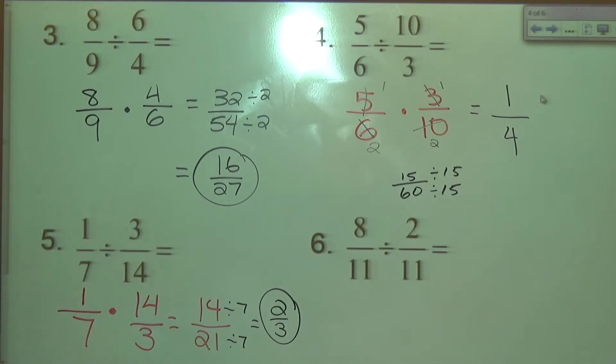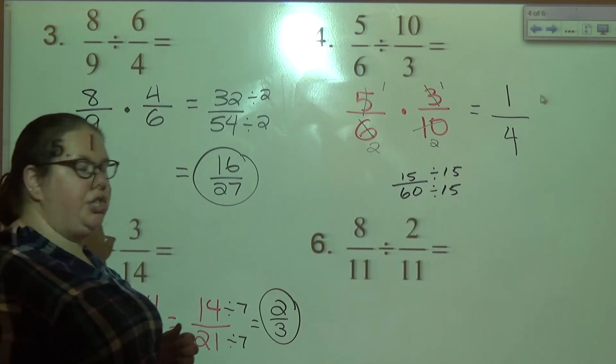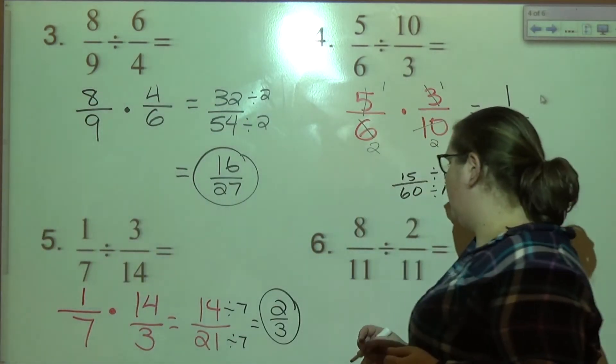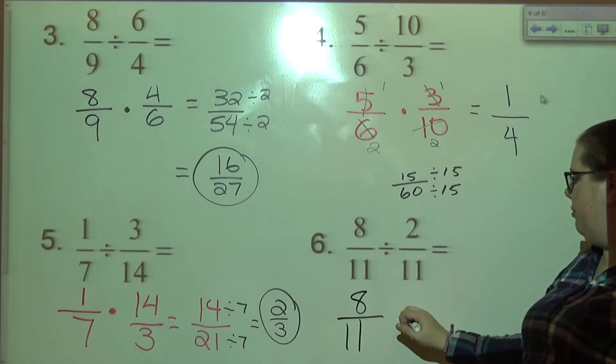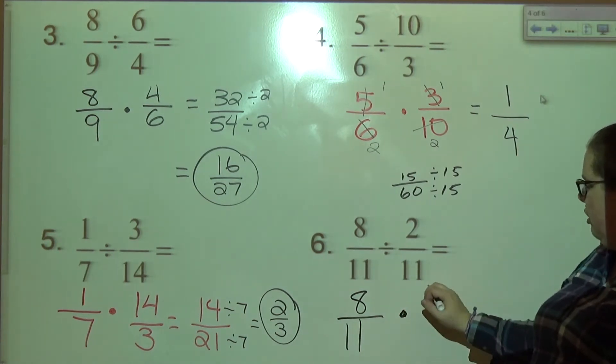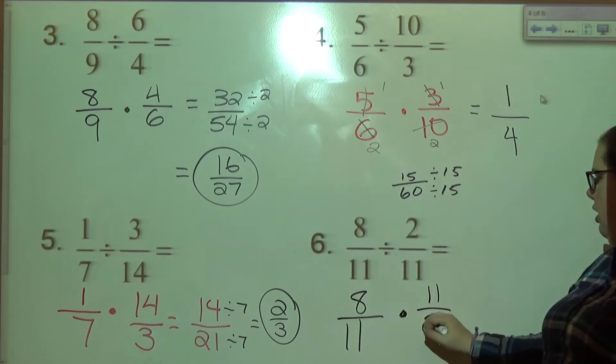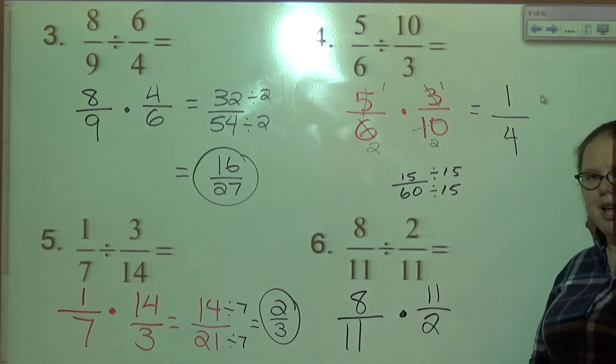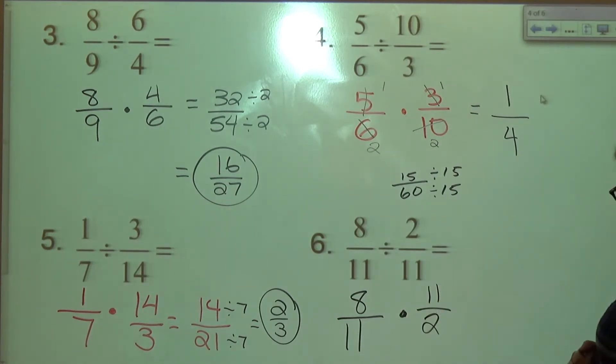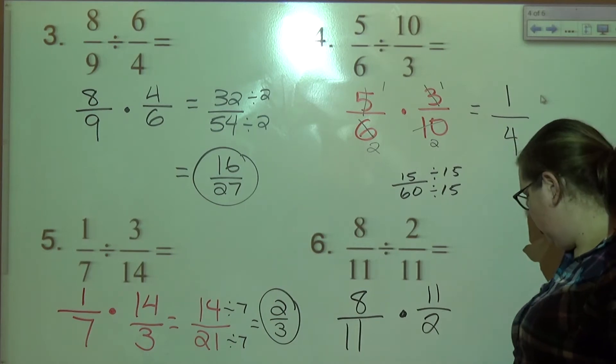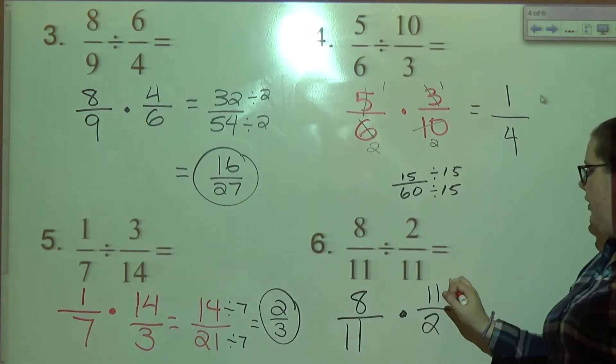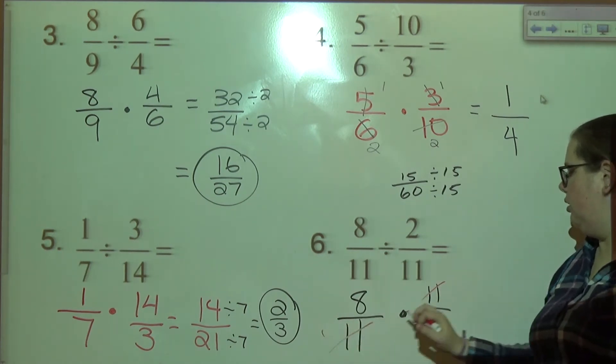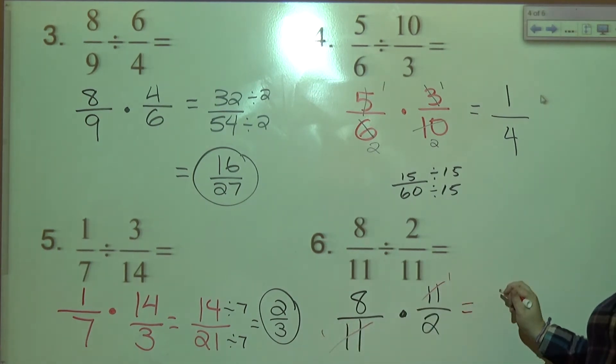Last one. Eight over eleven divided by two over eleven. So we're going to keep it. Switch it to times. Take the reciprocal or flip it. Now here's a nice one. Notice those elevens. Notice those elevens. So my elevens cancel out, right? Eight over two.